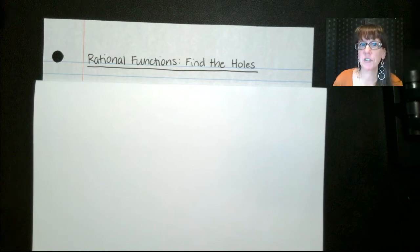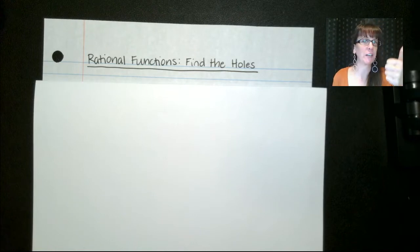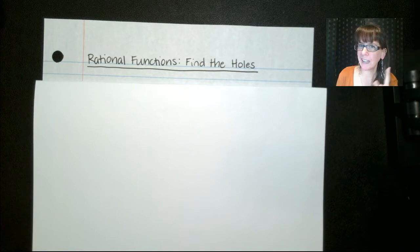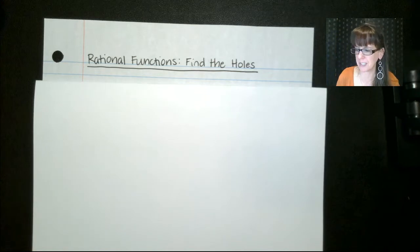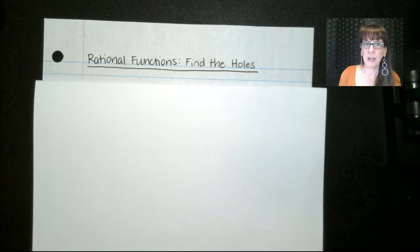Hi friends, welcome back. We're talking about rational functions, graphing rational functions specifically. We've talked about finding your vertical and horizontal asymptotes. Now what we're going to talk about is finding the holes. And I actually think this is the first thing that you should do when you're graphing these, because it can be a little bit confusing. Grab your notebook, let's do some practicing.